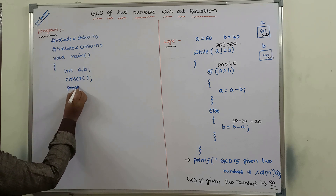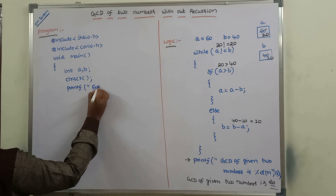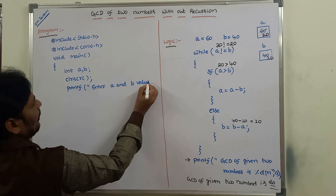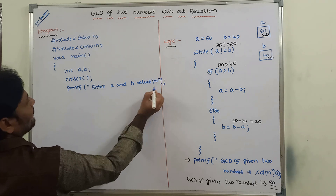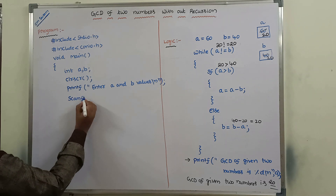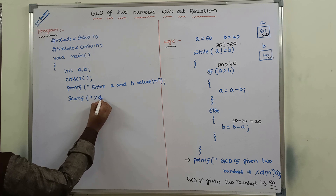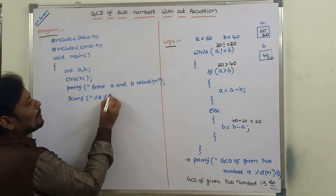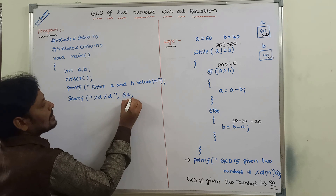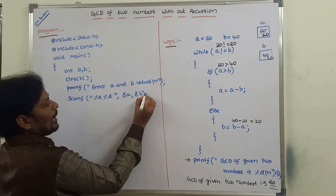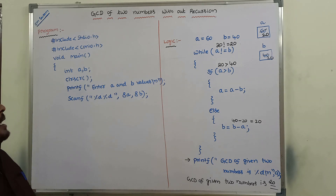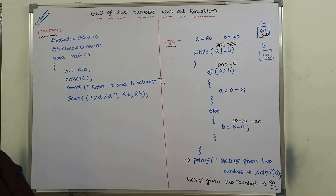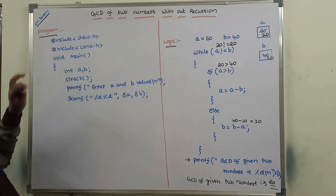Next, we write printf to display 'enter A and B values'. These A and B values are read from the keyboard using the scanf function. We write the format string with two percentage d's since A and B are declared as integers, followed by ampersand A and ampersand B. Both printf and scanf functions are available in the header file stdio.h, so we include that header file in our program.